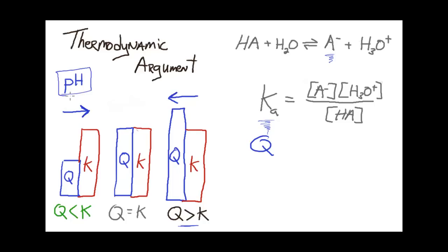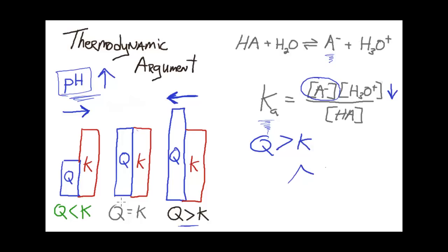Let's first look at what happens if we add A⁻ into this system using a thermodynamic argument. If we add A⁻, we're increasing the concentration of this product, which is in the numerator of the equilibrium constant expression. That will force Q to be greater than K. We know that if Q is greater than K, the system will shift towards the reactant side until equilibrium is re-established. The concentration of A⁻ initially goes up and then steadily drops, but the concentration of H₃O⁺ just goes down until equilibrium is re-established. Because H₃O⁺ goes down, the pH goes up. So by adding the conjugate base, the net result is the pH goes up.